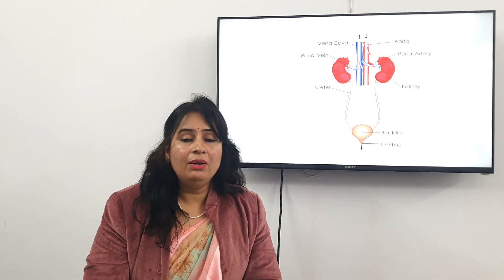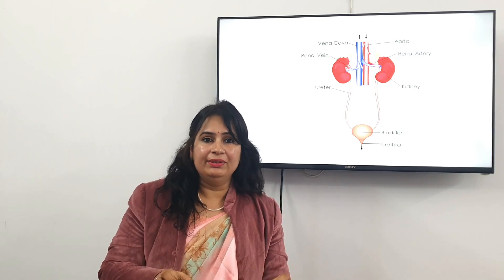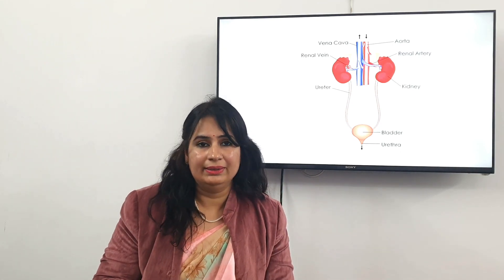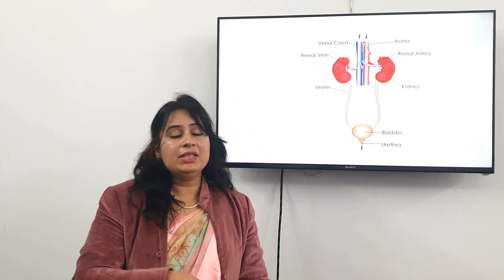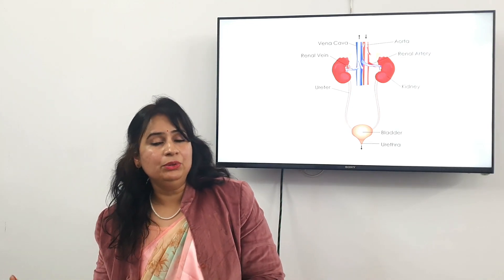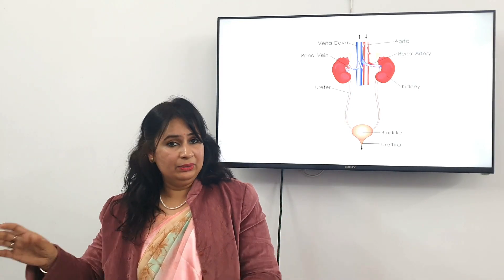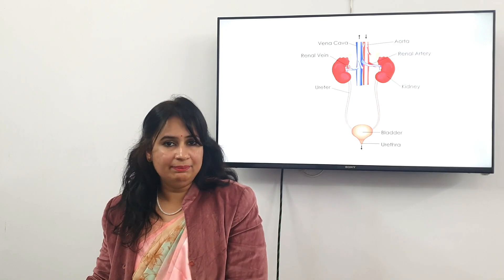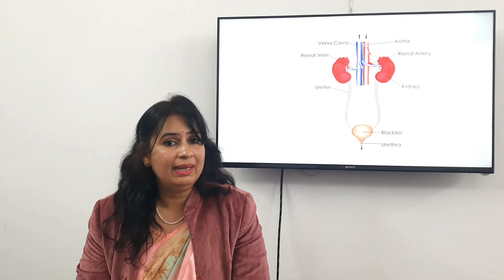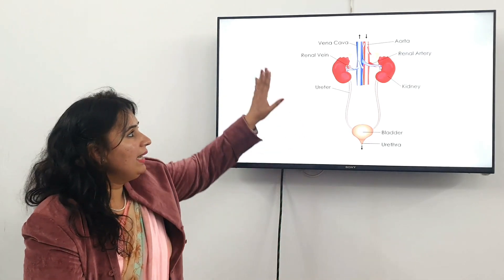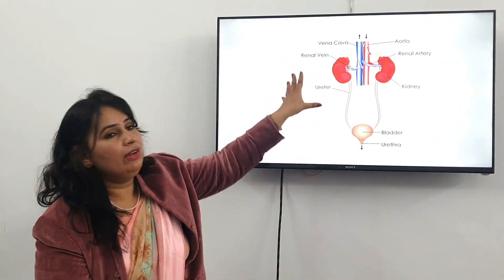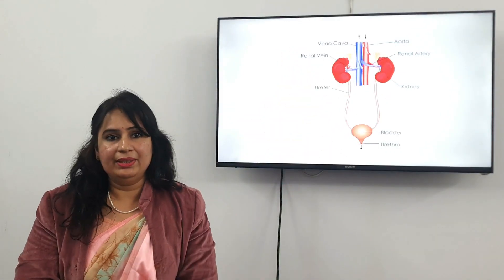Urea is formed in the liver. Because ammonia needs to be converted immediately into urea — a less harmful toxic material — this conversion is done by the liver. Then the urea is passed to the kidneys for purification and excretion.